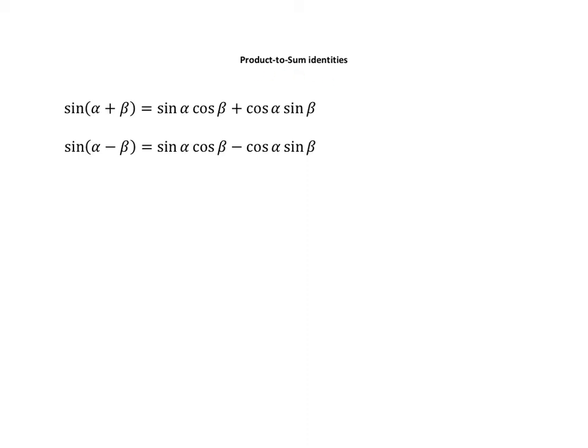To show where these come from, I stated the sum-difference formulas for sine, where if you add or subtract two angles together, we get this stuff over here. An observation to make is that on the right side of these two equations, I have a positive cosine alpha sine beta and a negative cosine alpha sine beta.